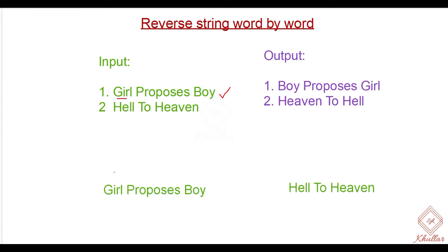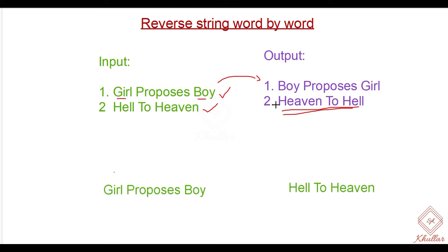So the word should not get reversed but the string should get reversed. So 'girl', which is coming in the first half, should be in the last half of the string. Similarly, if the input is 'hell to heaven', the output should be 'heaven to hell'. The word should be at the reverse position — 'hell' is coming in the first half but ends up in the second half.